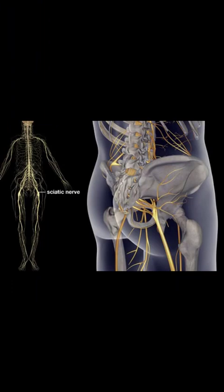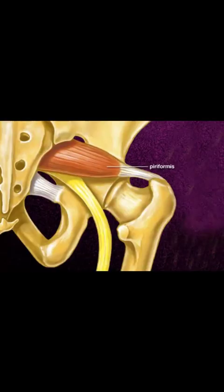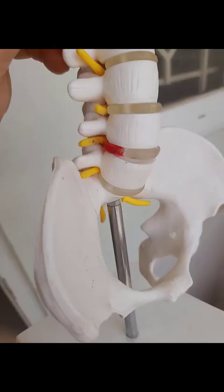When treating sciatica, we're going to be treating either L4, L5, or both. But as a chiropractor, I also look at the balance of the pelvis — how is the pelvis balanced? Is it biomechanically level such that it will take the pressure off these low back segments? I'm not just treating sciatic pain; I'm treating the balance of the spine, the balance of the pelvis, and how the spine is aligned overall. This is what chiropractic does.